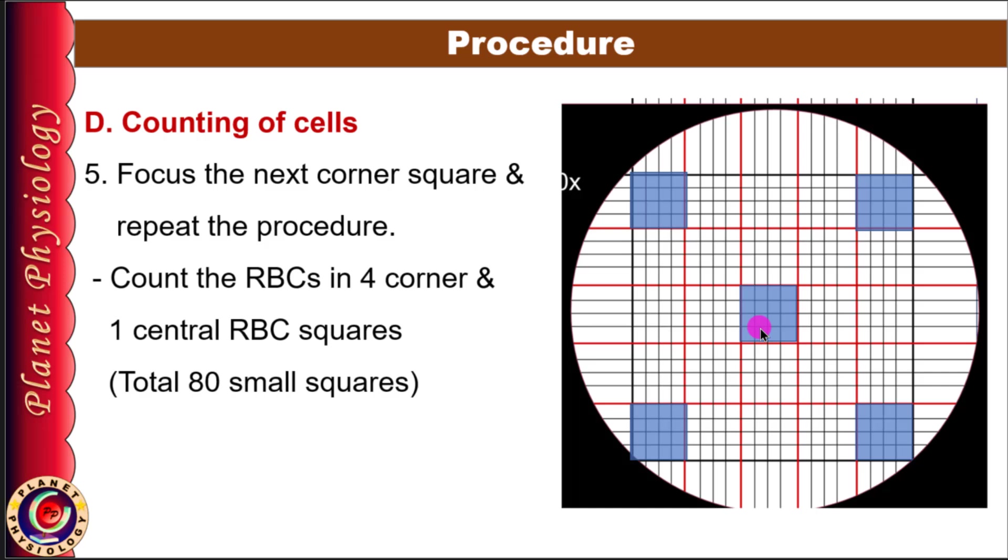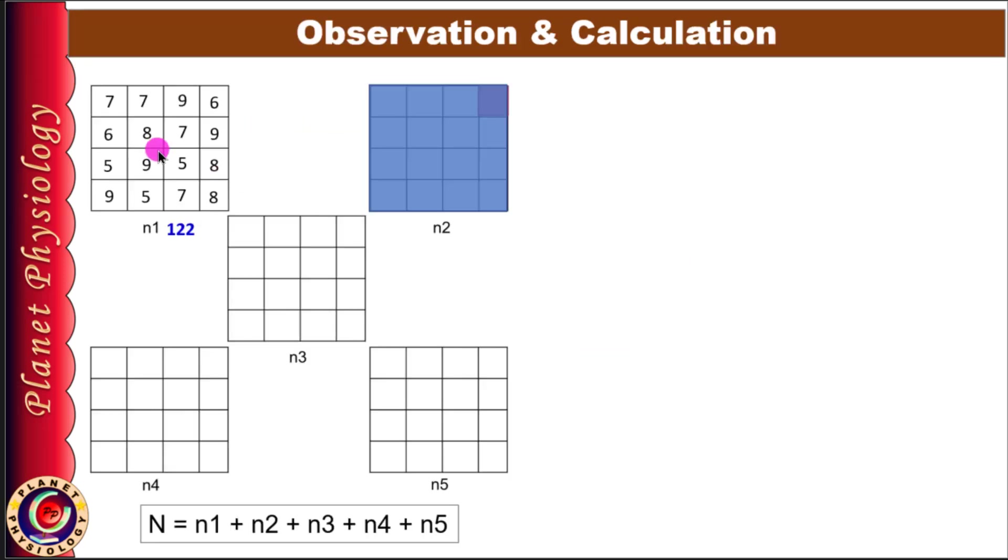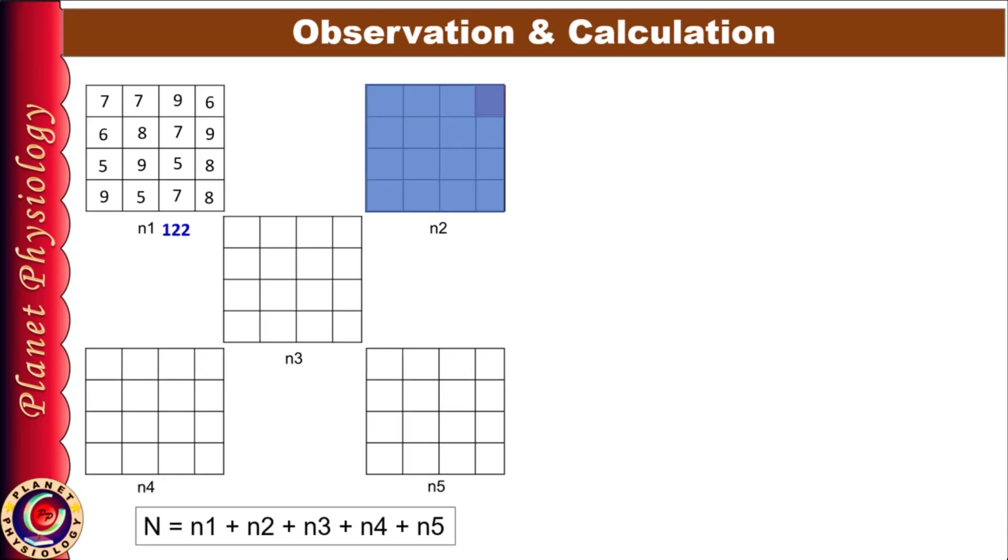Now coming to the calculation part. Note the cell counts for each medium square as N1, N2, N3, N4 and N5. If the difference between the maximum and minimum count exceeds 20, recharge the chamber and repeat the counting process because it indicates that cell distribution is uneven. If the difference is less than 20, proceed with calculation. Do grand total of all 5 squares and denote it as N.